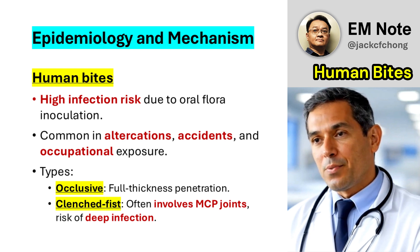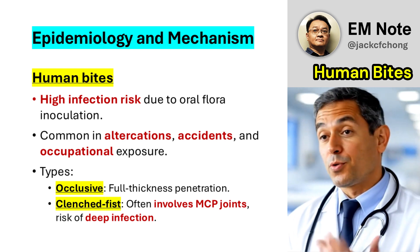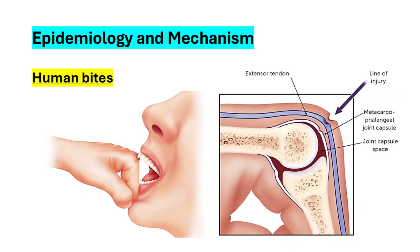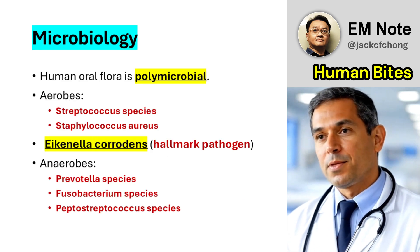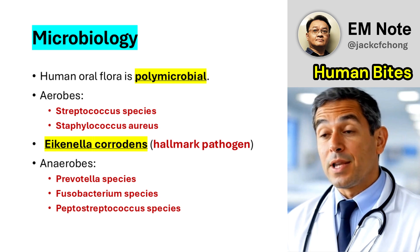Occlusive injuries involve full thickness penetration by teeth, often seen on exposed areas of the body. Clenched fist injuries occur when a closed fist strikes a person's teeth, typically affecting the dorsal aspect of the metacarpophalangeal joints. These injuries may extend into deeper structures, increasing the risk of infection and other complications.